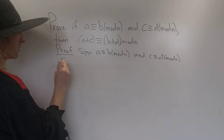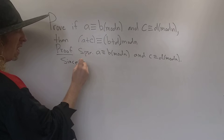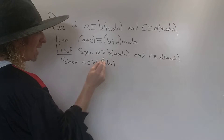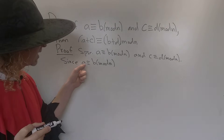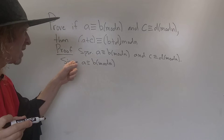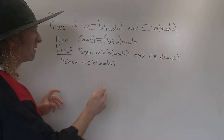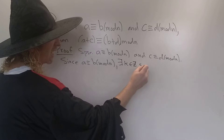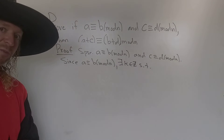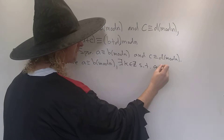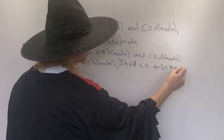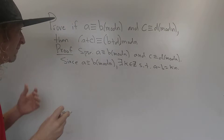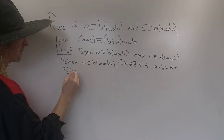Since A is congruent to B modulo N — what does that mean? A congruent to B modulo N means that A minus B is a multiple of N. So there exists an integer K such that A minus B equals KN. That's what it means for A minus B to be a multiple of N — it equals an integer times N.